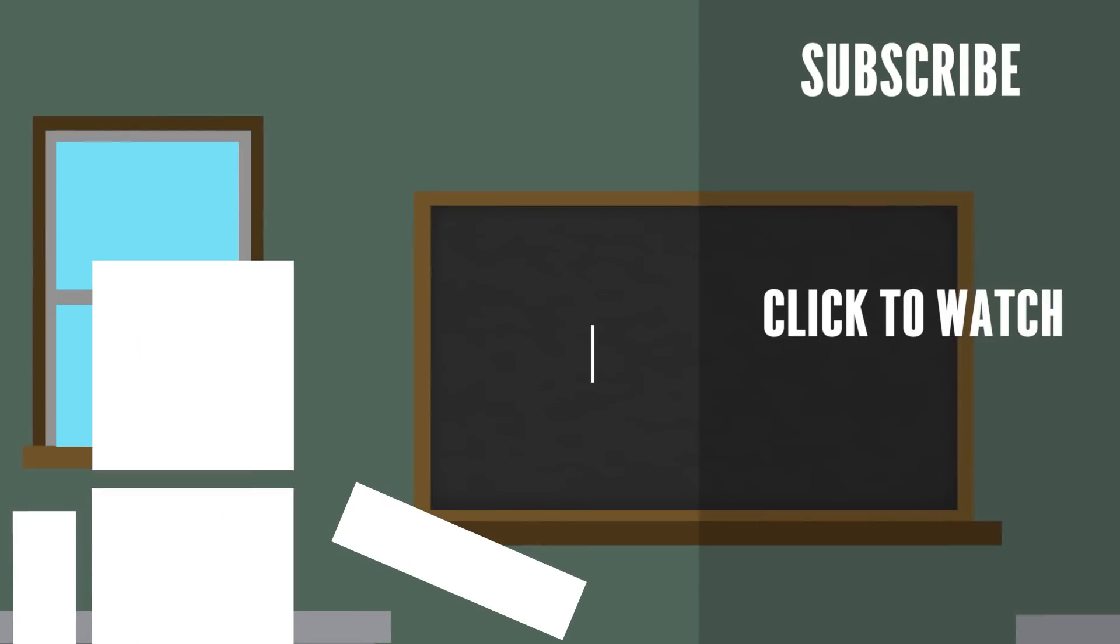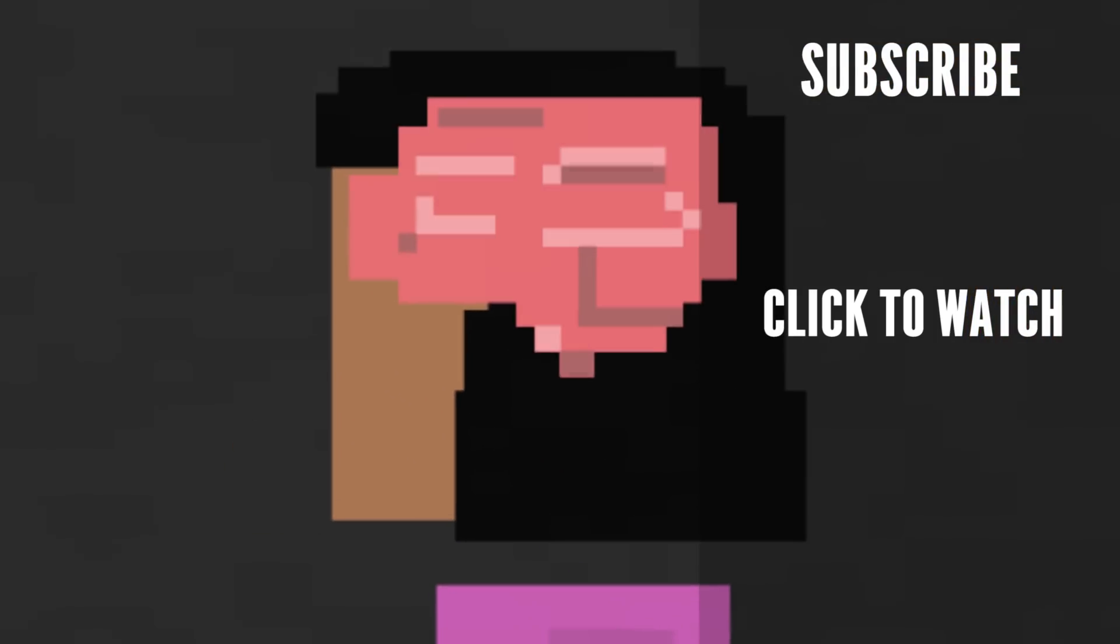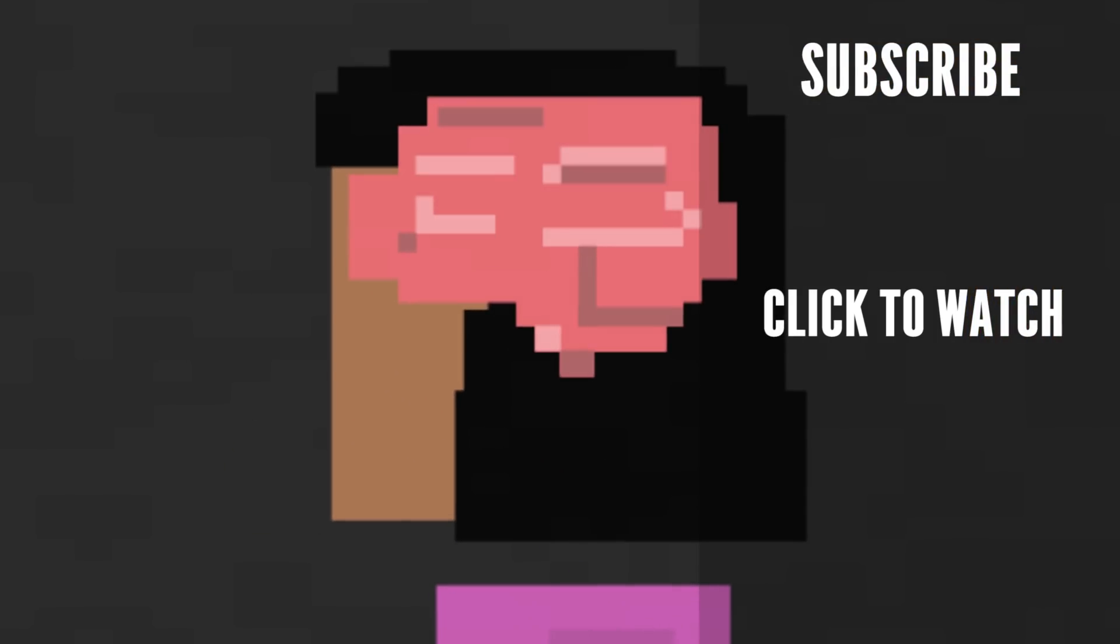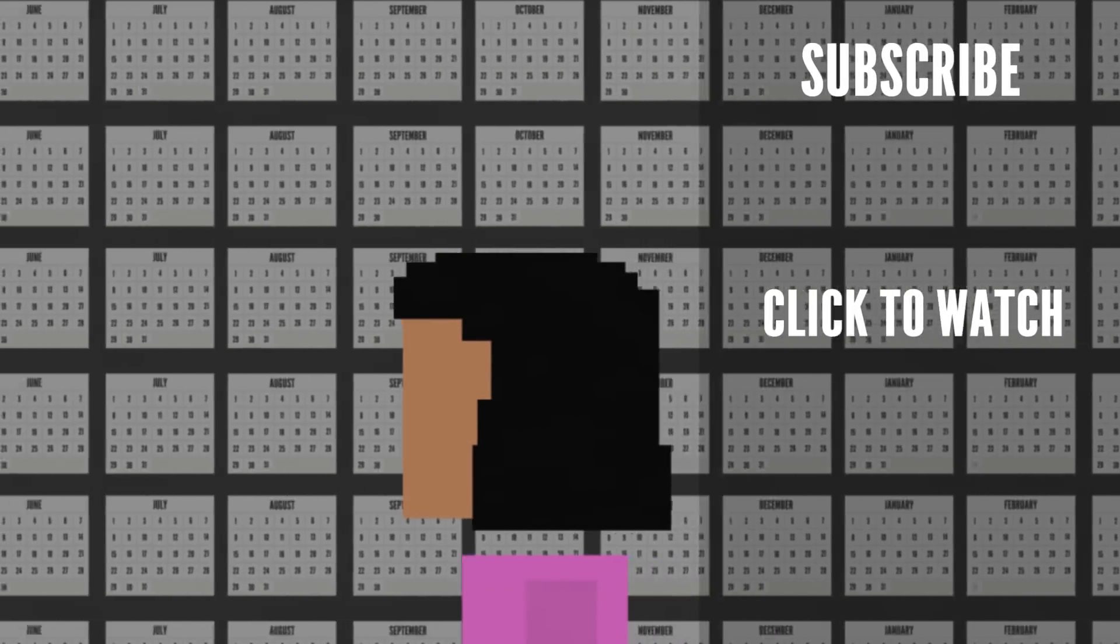Curious to know what would happen if you never forgot anything? Check out this video! Hyperthymesia is a rare mental state or neurological condition where a person has a very detailed autobiographical memory. Basically, they remember a lot about their past.